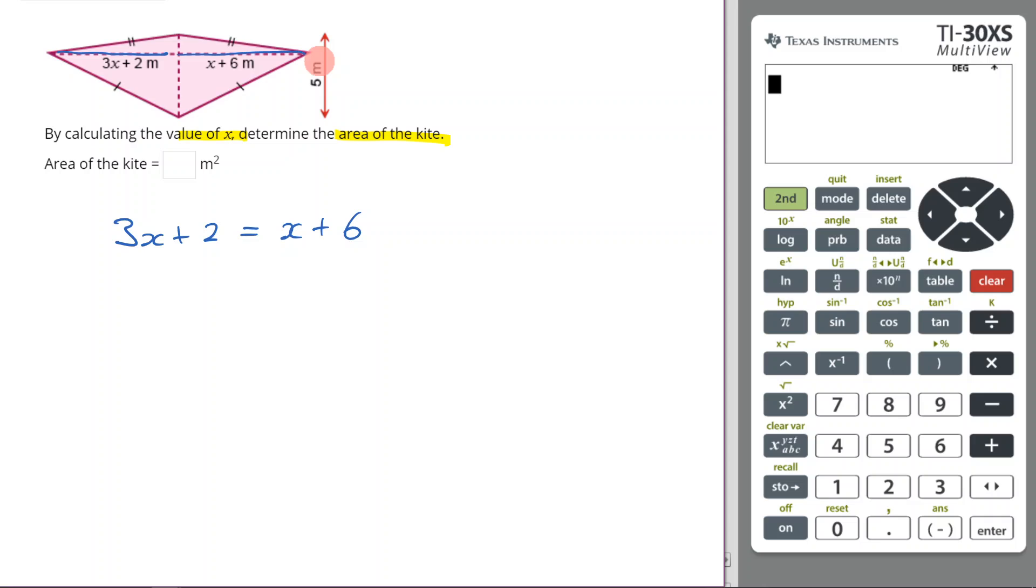Now I'm going to solve this for x. This is where a bit of rearranging comes into play. Remember, the aim of the game is to get x by itself. There are multiple ways to do this, but I might start by subtracting x from both sides, and that means I would get 2x plus 2 equals 6.